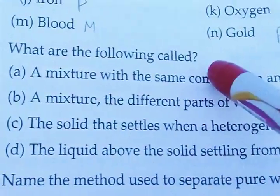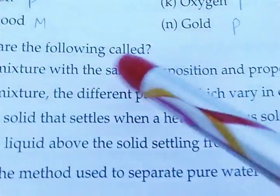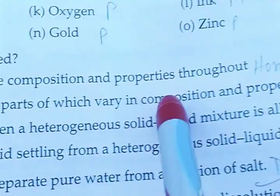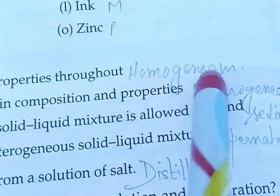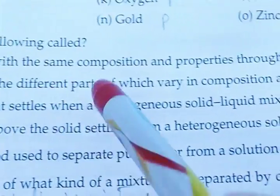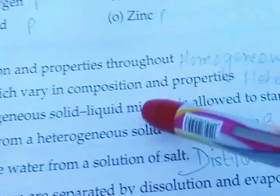What are the following called? A mixture with the same composition and properties throughout, that is, homogeneous mixture. A mixture, the different parts of which vary in composition and properties, that is, heterogeneous mixture.